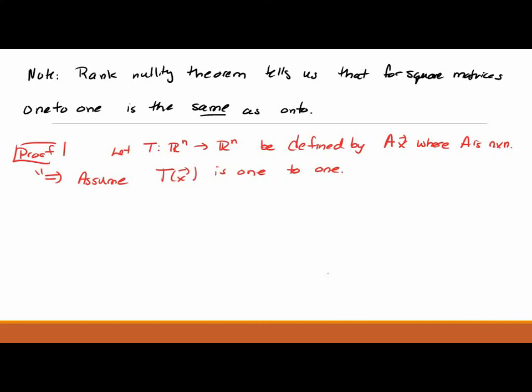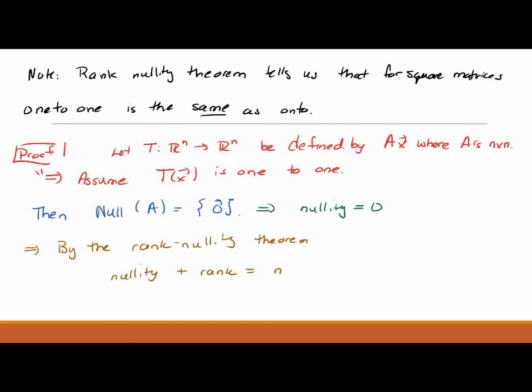Here's the problem. If you have a linear transformation that goes from R^n to R^n, then the matrix that's representing that linear transformation is going to be square. It's going to be n by n. So assume that this transformation is one to one. Well, then there's a theorem from your book that says that the null space is only the zero vector. There's nothing else in it. Well, that means the nullity is zero. But the rank nullity theorem says that rank plus nullity equals zero or has to be n. The dimension of the space. Well, that forces the rank to be n.